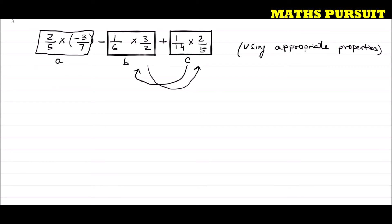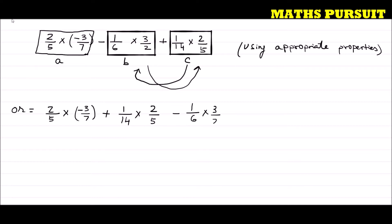So that is equal to: 2/5 × (-3/7), then plus 1/14 × 2/5, then minus 1/6 × 3/2. This move happened using the commutative property — we moved part C to position B and part B to position C.